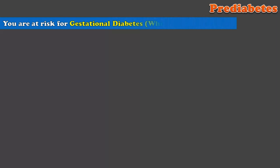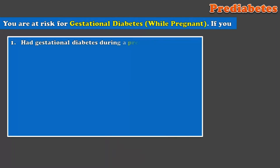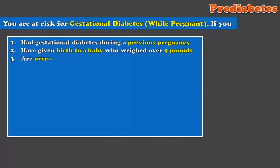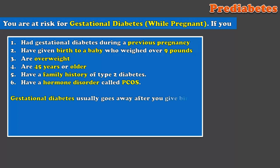If you are a pregnant woman, you may be at risk of developing diabetes. For example, if you had high blood sugar during your last pregnancy, gave birth to a baby weighing more than 9 pounds, are overweight, are over 45 years old, have a family history of diabetes, or have PCOS. Gestational diabetes usually goes away after childbirth, but there is also a risk of developing type 2 diabetes.